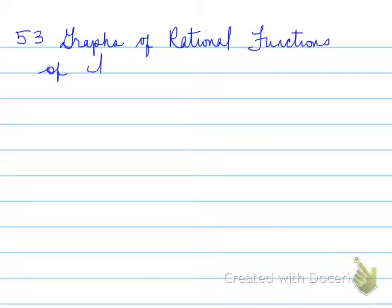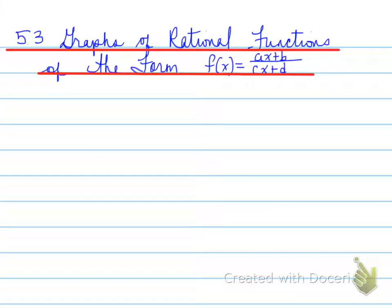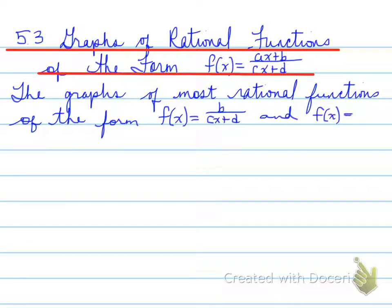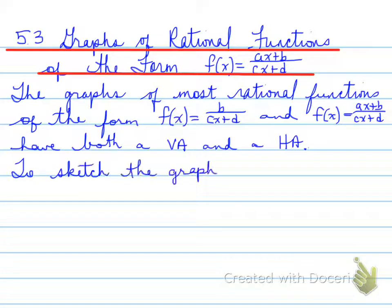Section 5.3: graphs of rational functions of the form (ax + b) / (cx + d). So basically it's two linear functions being divided. The graphs of most rational functions of this form have both a vertical asymptote and a horizontal asymptote.